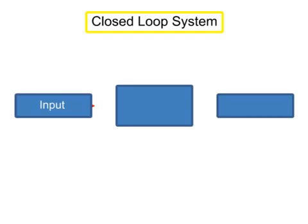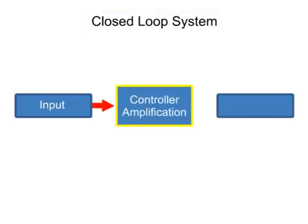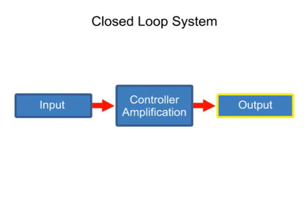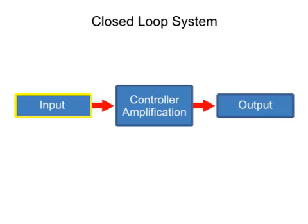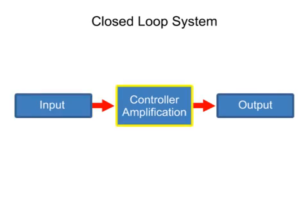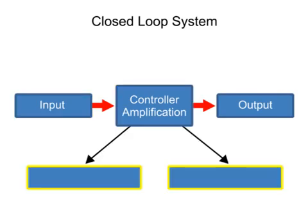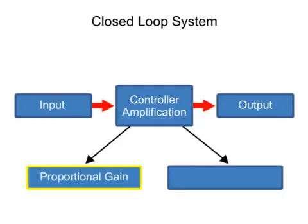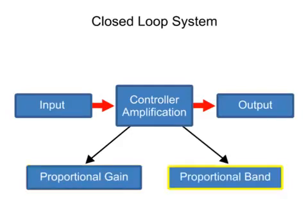In a closed-loop system, a controller is used to amplify the amount of output change in proportion to the change that occurs at the input. Controllers provide amplification using one of two modes of proportional functions: proportional gain and proportional band.